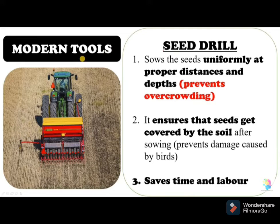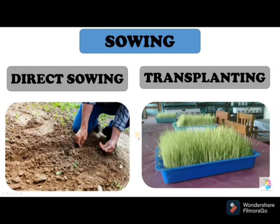All the methods discussed so far are direct sowing methods. One more method is transplanting. In transplanting, seeds are first grown in a nursery. When they grow into seedlings, those seedlings are then transplanted to the field manually.